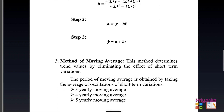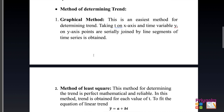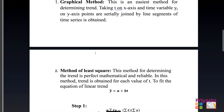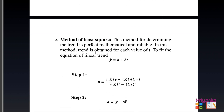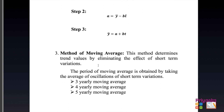The third method is the method of moving average. This method determines trend values by eliminating the effect of short-term variation. The period of moving average is obtained by taking an average of oscillations of short-term variation — it can be 3-yearly, 4-yearly, or 5-yearly moving average. The graphical method will be covered in Exercise 4.1, least square in Exercise 4.2, and moving average in Exercise 4.3.